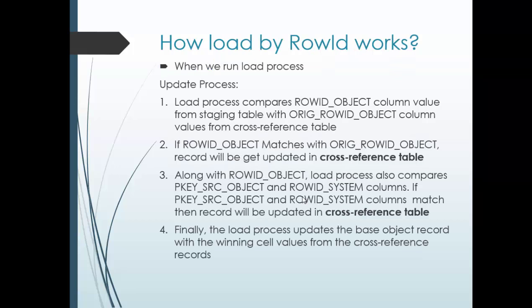Now, how does Load by Row ID work internally? The process is categorized into two ways: the insert process and the update process. For the update process, when you start a load job — which pushes records from the staging table into the base object — the first thing it does is compare the row ID object with the original row ID object column in the cross-reference table.